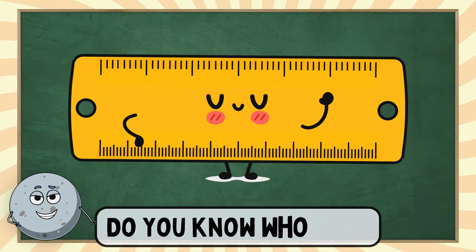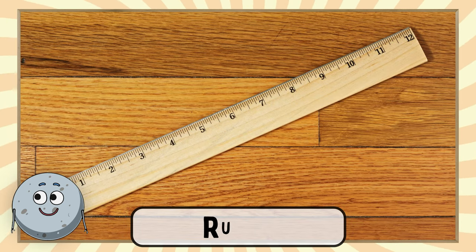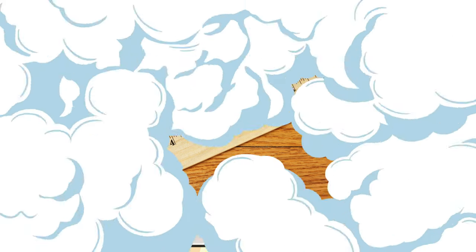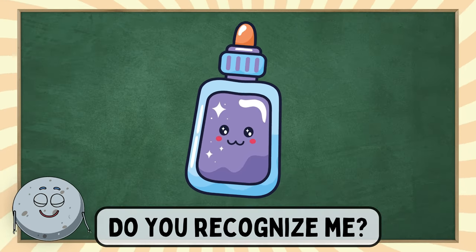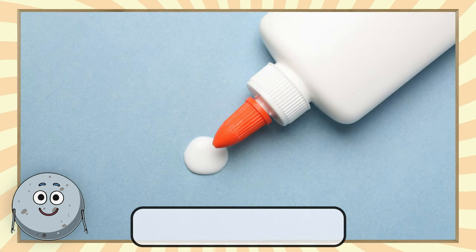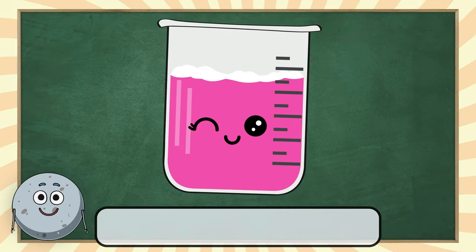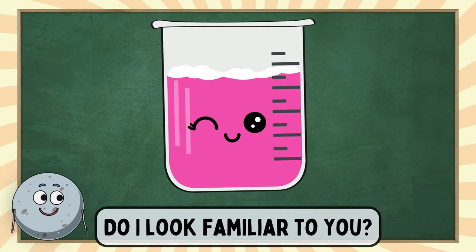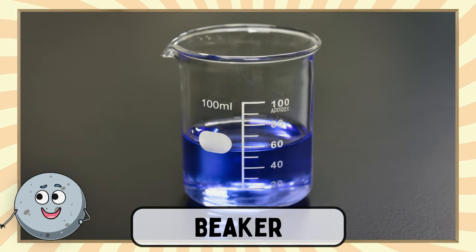Do you know who I am? I am Set Square. Do you recognize me? I am Ruler. Do I look familiar to you? I am Beaker.